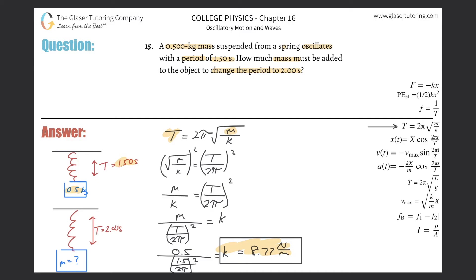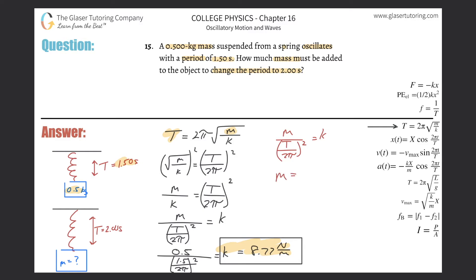Instead of rederiving everything, I'll use the rearranged formula directly: m equals k multiplied by (T over 2π) squared. The spring constant is 8.77, the period is now 2 seconds, divided by 2π — so the 2's cancel, and it becomes 8.77 divided by π squared. The mass comes out to about 0.889 kilograms.